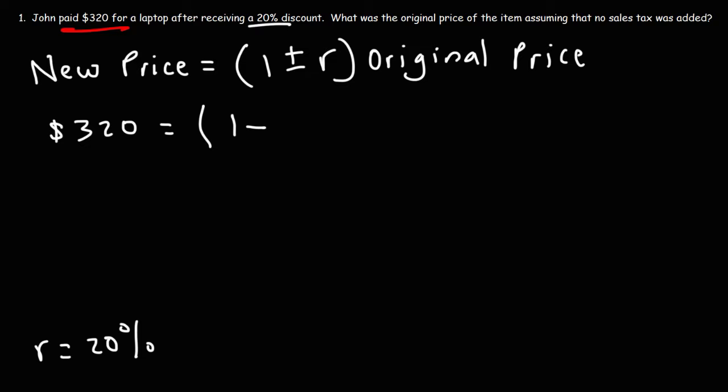Well, there's two things you can do. You could divide 20% by 100, and that will give you 0.20. Or you could simply move the decimal two units to the left, which will still give you 0.20. So that's our R value.